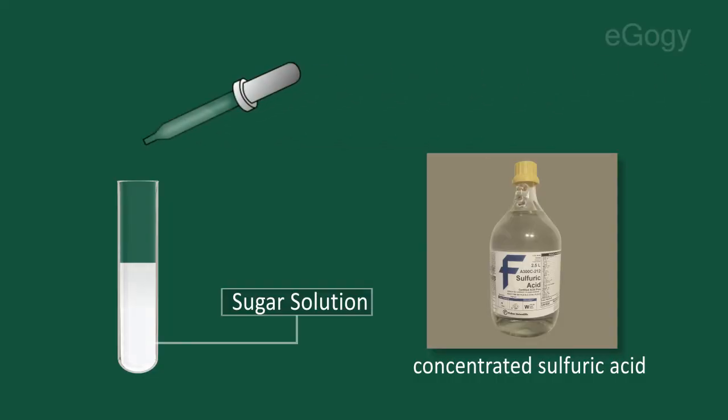When you add concentrated sulfuric acid to sugar, the result is interesting. The sulfuric acid dehydrates the carbohydrate sugar, removing the water and heating it into steam, leaving behind a carbon form.